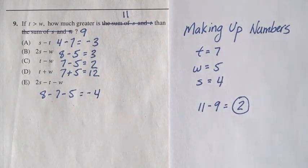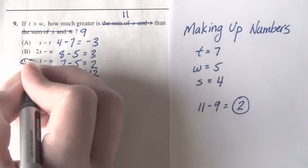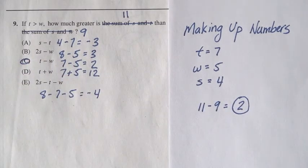So now we see that there's one and only one answer choice that works out the way we want it to, and that is c. And that's how you do it, by making up numbers.